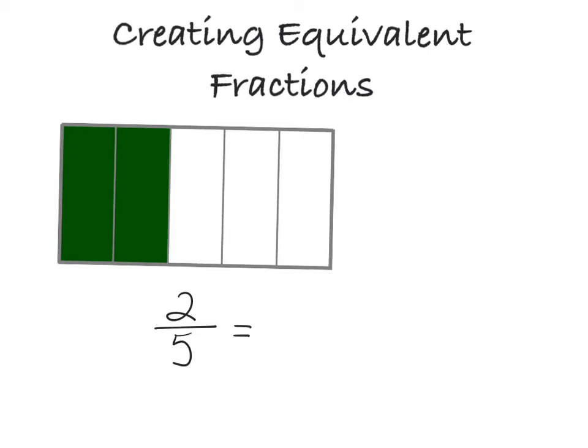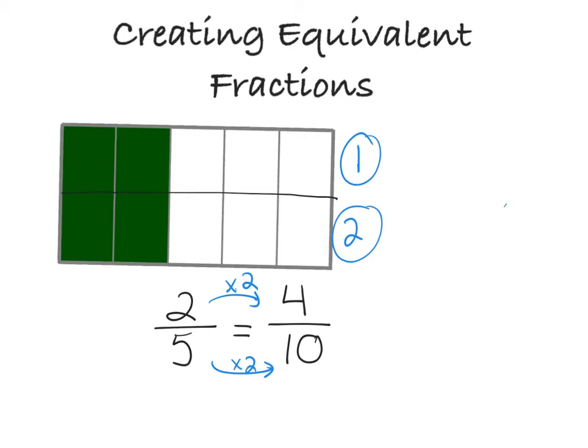Well to create an equivalent fraction I would need to split this model. So I'm going to equally split it down the center. So now I've created 4 pieces that are shaded and there are a total of 10. So I have 4 tenths. And what I want you to notice is when I split that, I made it into 2 separate sections. So I kind of multiplied it by 2 and you can see that that's what happens to the numerator and the denominator is I multiplied it by 2.